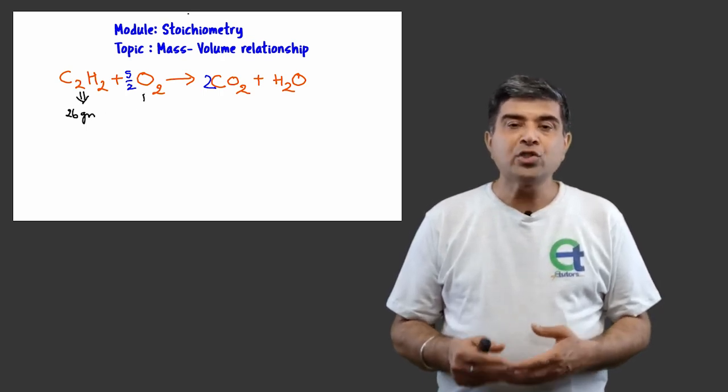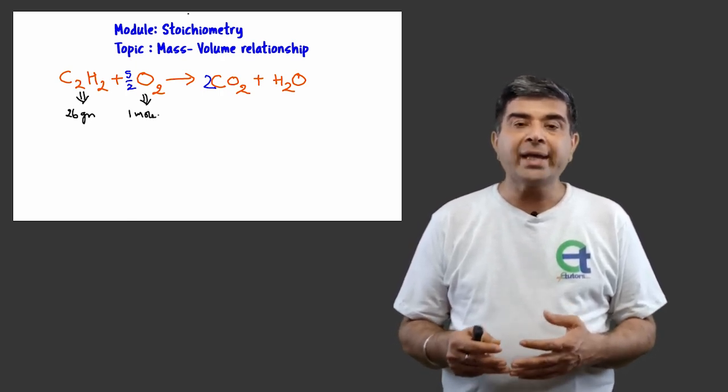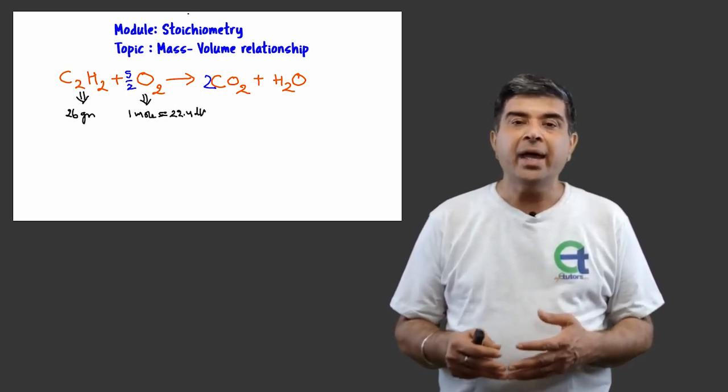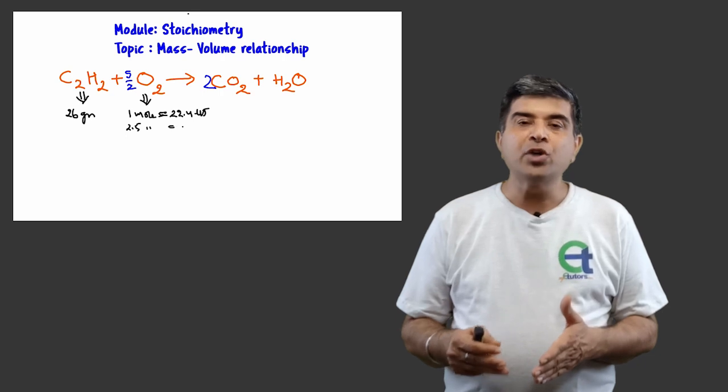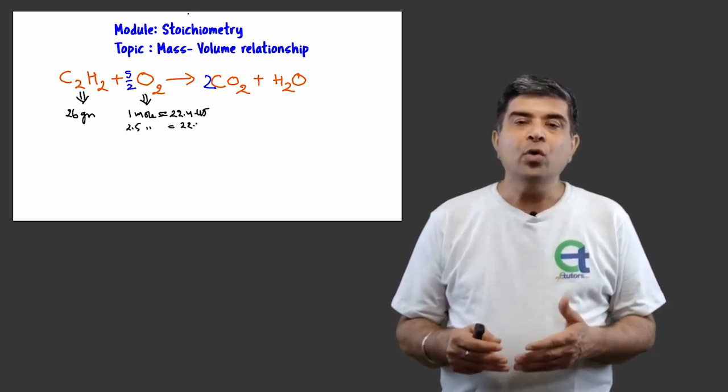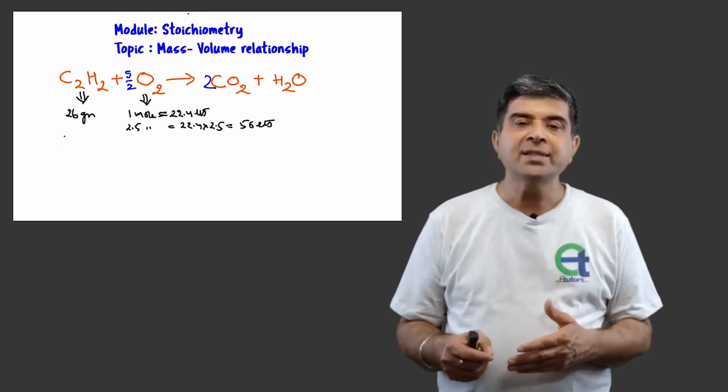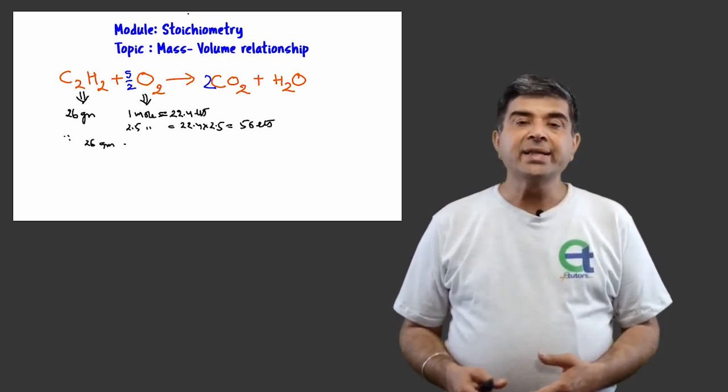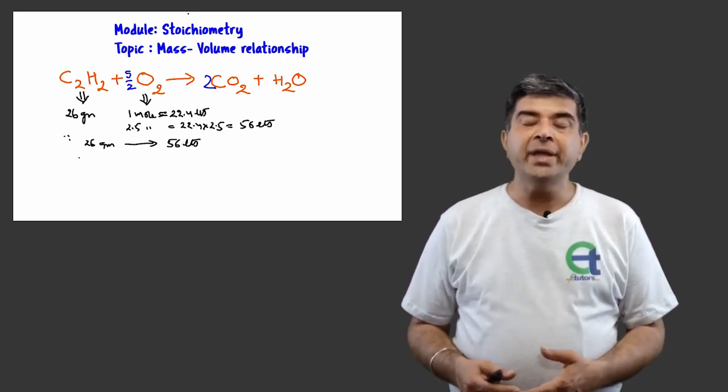Thus the molecular mass of acetylene is 26 grams per mole and the volume of oxygen with regard to Avogadro's law that one mole of a gas occupies 22.4 liters at STP. In fact, the balanced chemical equation possesses 2.5 moles of oxygen at STP. So using unitary method, that one mole corresponds to 22.4 liters, so 2.5 moles would correspond to how many liters? So it would be 22.4 divided by 1 into 2.5, gives us 56 liters of oxygen.